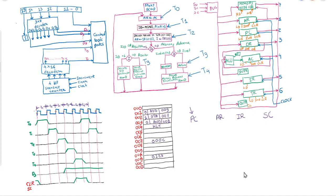Hello students, let us start our discussion. In the previous lecture we discussed what an instruction cycle is. In today's session we will try to merge whatever we have learned till now. This covers the timing and control unit of a basic computer, the timing diagram, the instruction cycle, the common bus architecture, and stored program organization. Today we will try to merge the hardware of the control unit, the hardware of the common bus architecture, and the conceptual part of the instruction cycle.